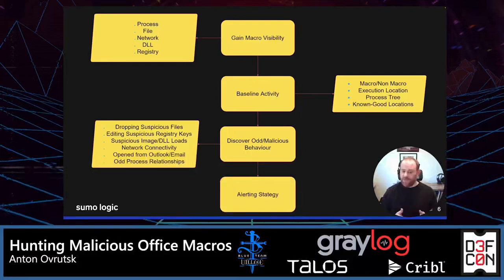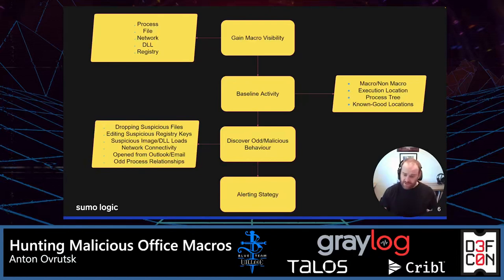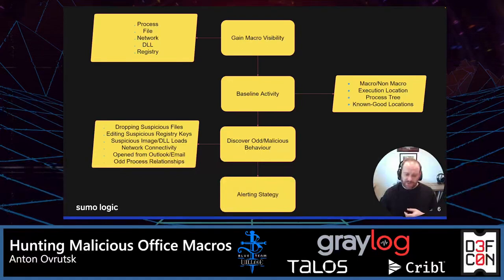Baselining means things like process trees, known good locations, where macros are executing from, and what they're doing. After you've gained some visibility and started to baseline behavior in your environment, you can then start to hunt for or alert on suspicious activity. This could mean dropping of a suspicious file, editing suspicious registry keys, office binaries connecting to odd URLs, or abnormal process trees.